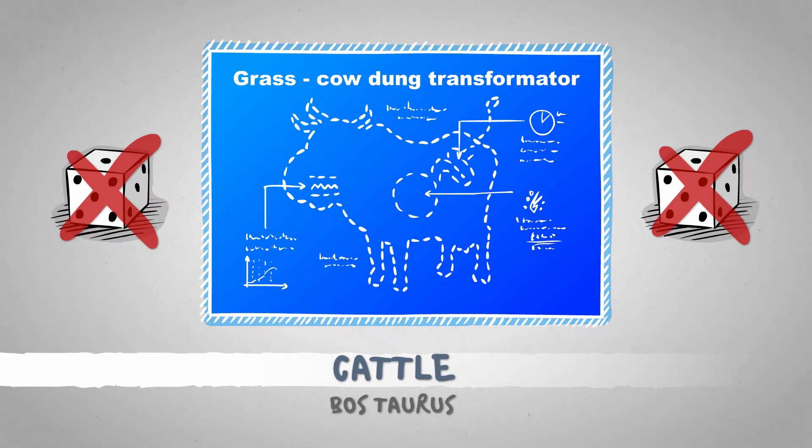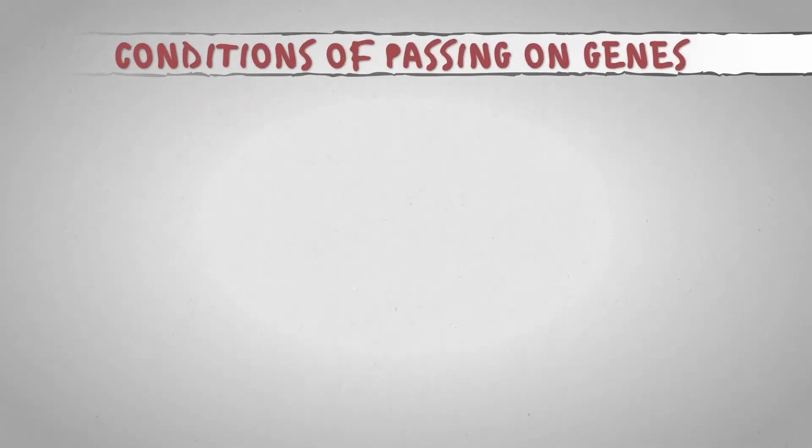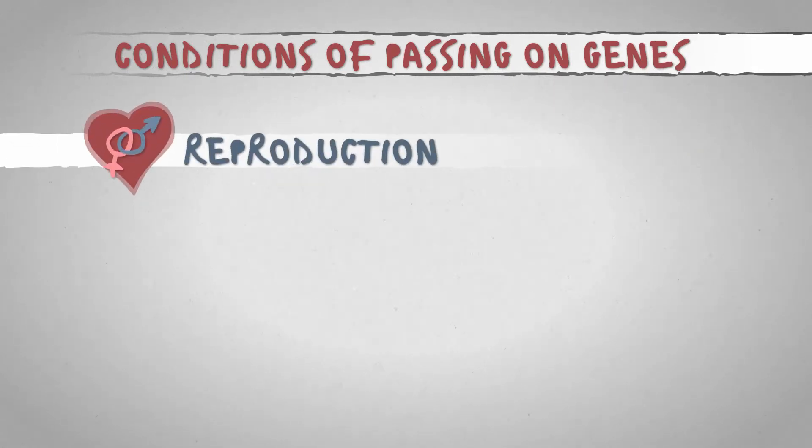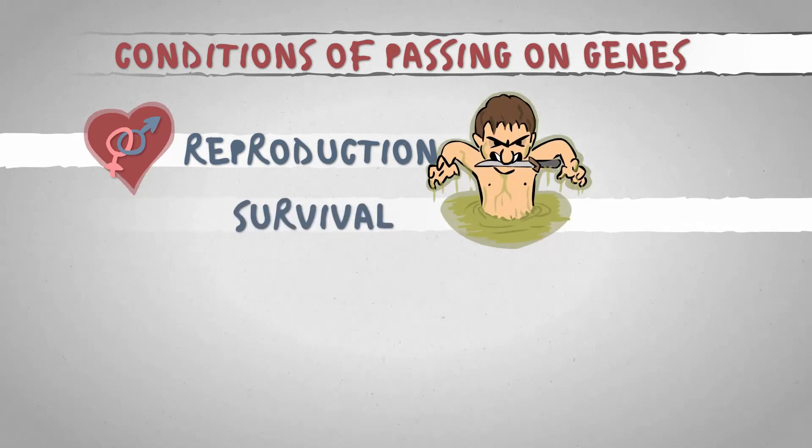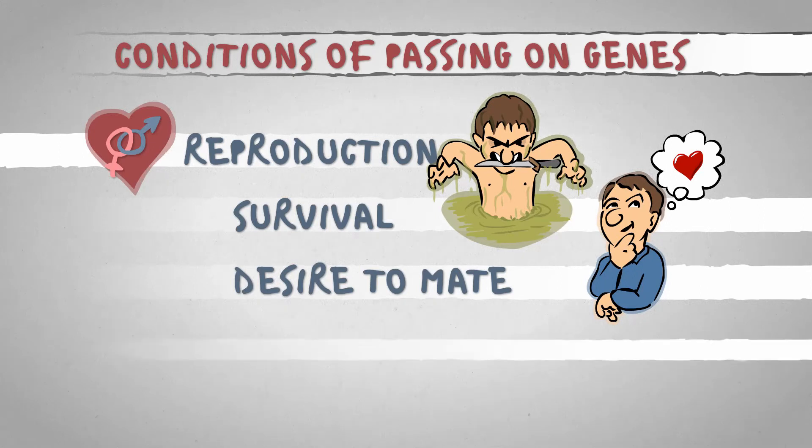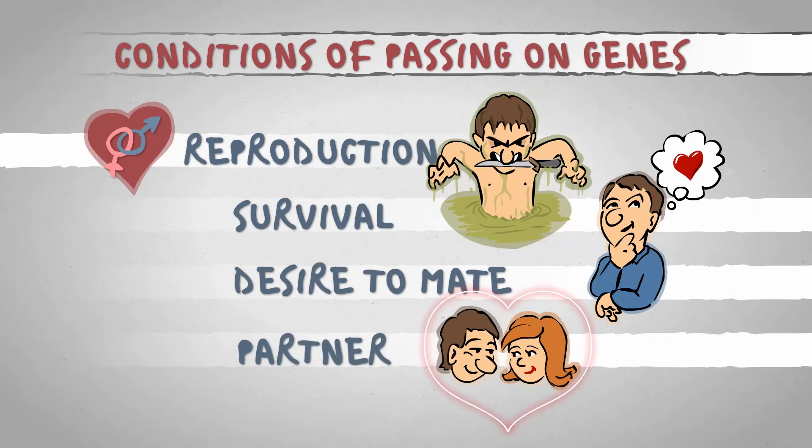Well, it isn't. Maybe it's evident that only those living beings can pass on their genes that successfully reproduce. For this to happen, it's quite useful to stay alive, to have an urge to mate, and to find a cooperating partner.